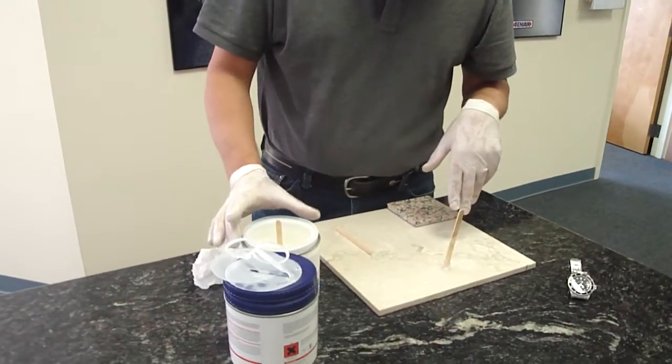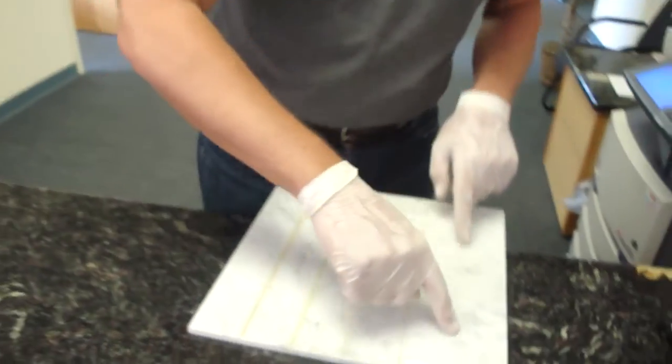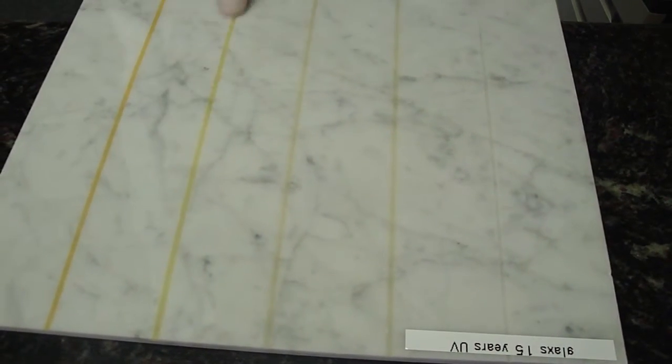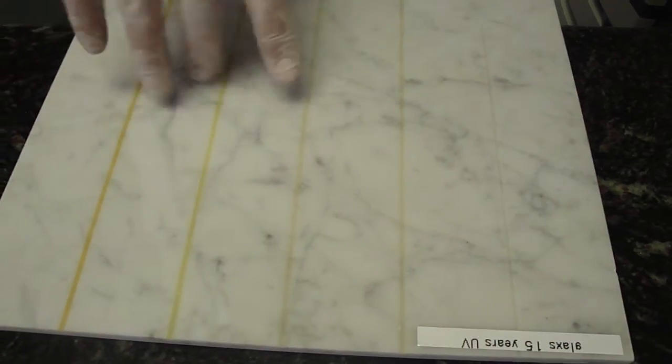And the other thing that I wanted to show you is this is the glue that was put in an oven to simulate 15 years of UV sun. And as you can see those are different other epoxies that we have and they all turn some more, some less, but they all turn very yellow at the UV.